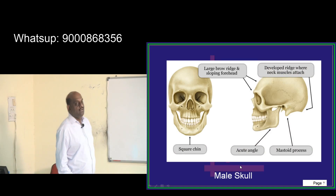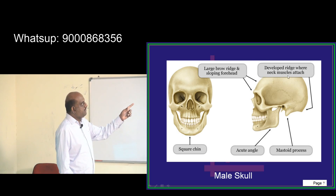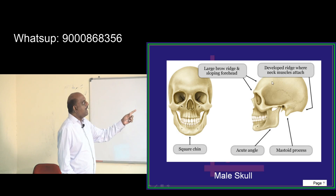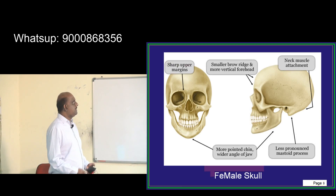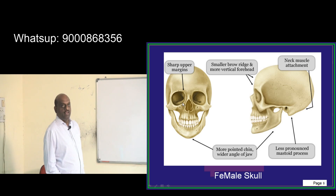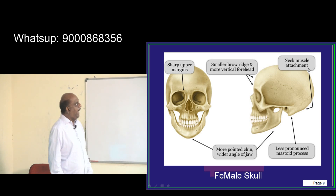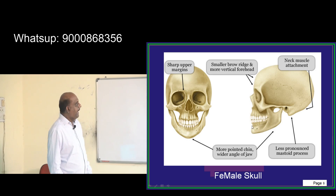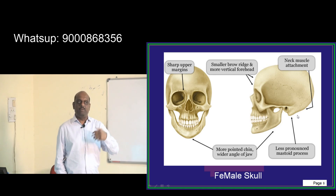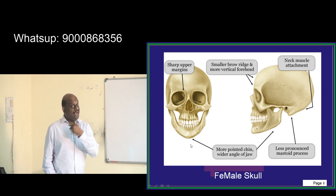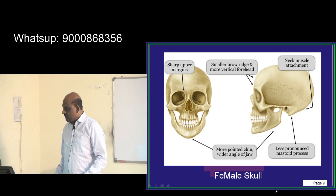A square chin, acute angle, mastoid process, a developed ridge where neck muscles attach, a larger brow ridge, and a sloping forehead characterize a male skull. Whereas a sharper upper margin of the orbit, a smaller brow ridge, a more vertical forehead, less pronounced neck muscle attachment, a less prominent mastoid, and a more pointed chin with a wider angle of the jaw characterize the female skull.